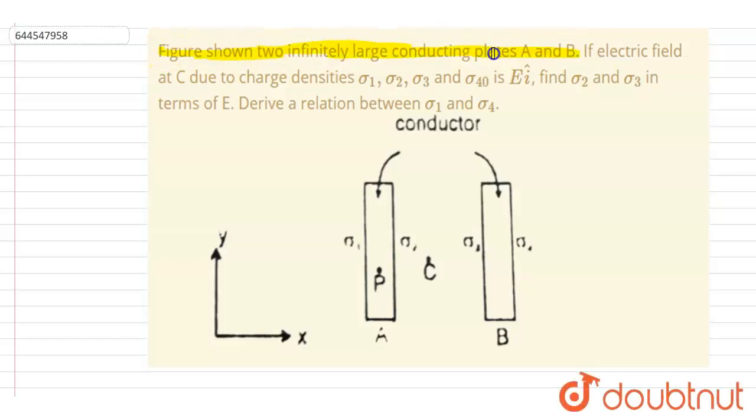infinitely large conducting plates A and B. If the electric field at C due to charge densities σ₁, σ₂, σ₃, and σ₄ is E î, then find E₂ and E₃ in terms of E and derive the relation between E₁ and E₄.